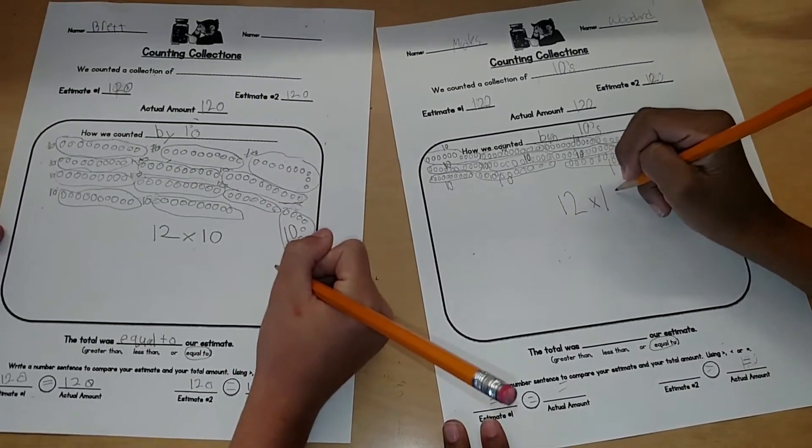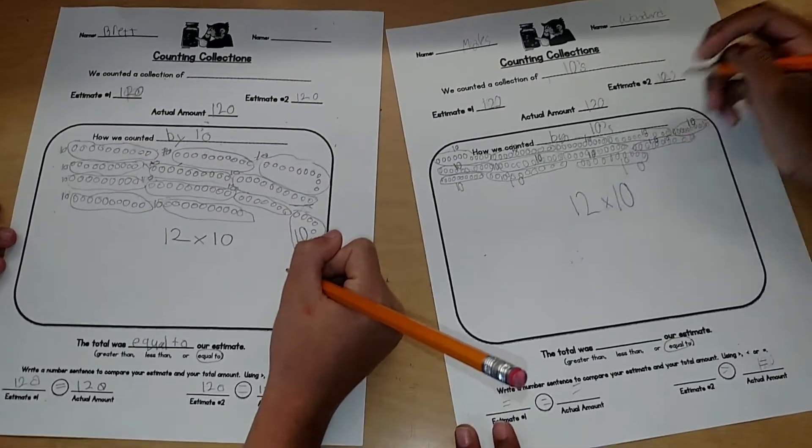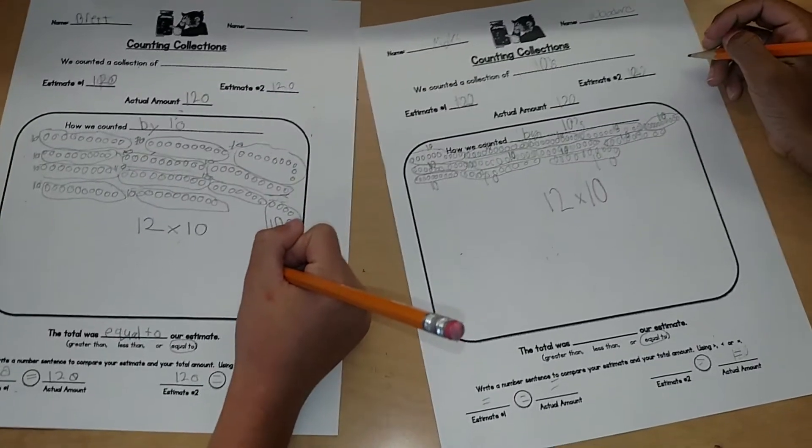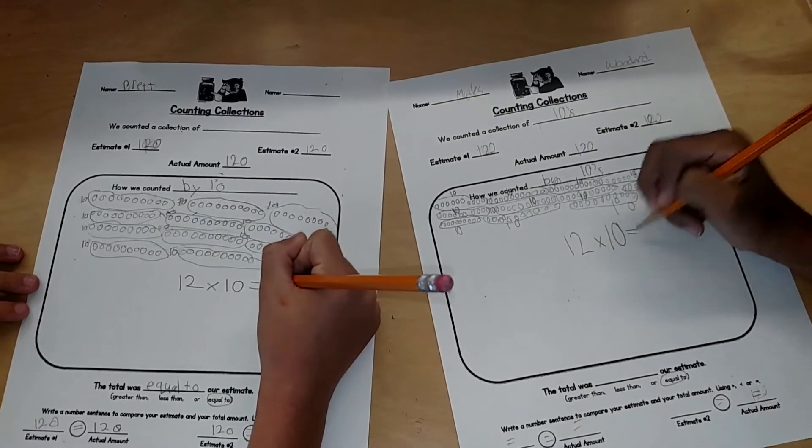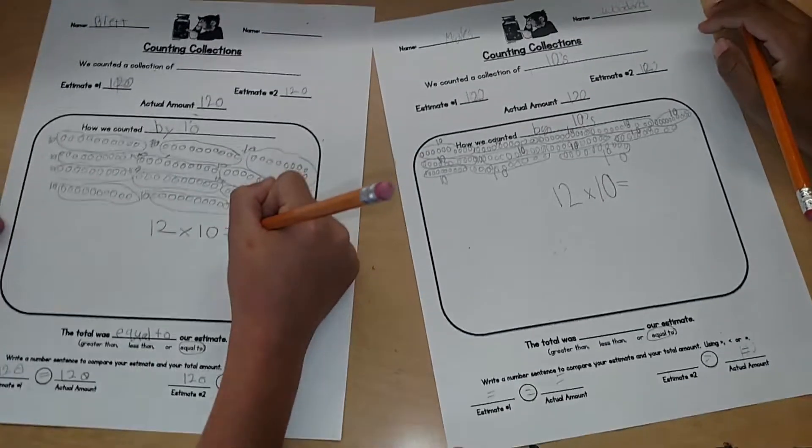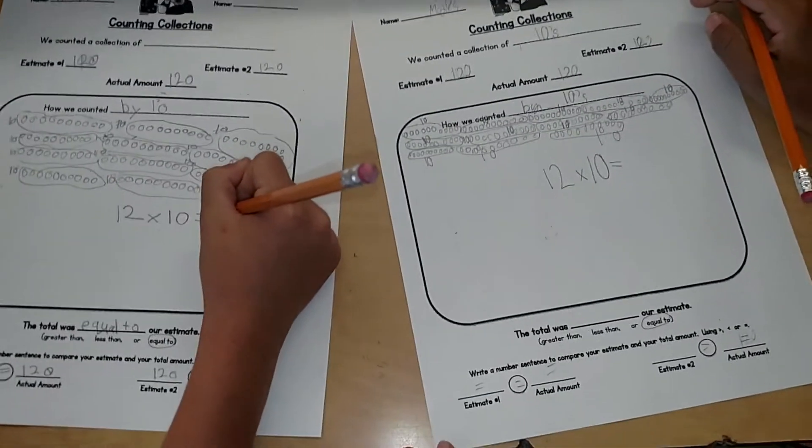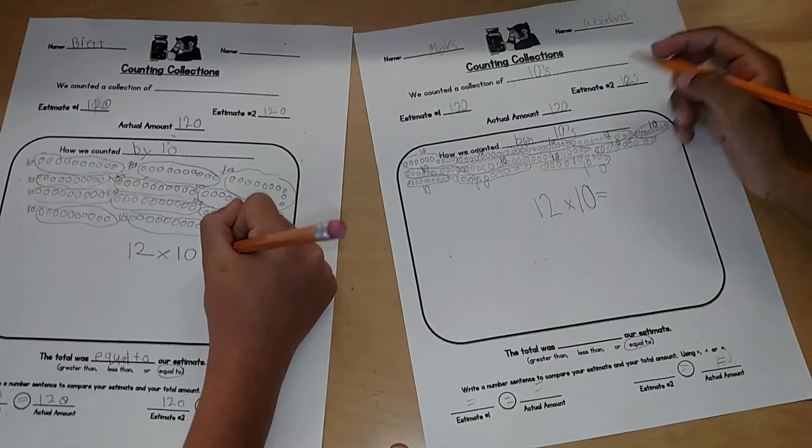Is the same as. So you can write the equal sign, right? So 12 times 10 or 12 groups of 10 is the same as. And how many do you have all together? 120. 120. So then you can write it.